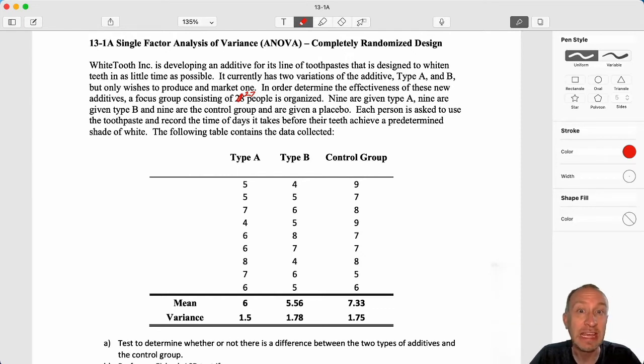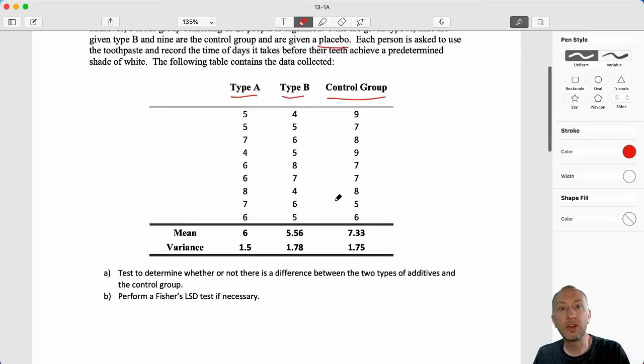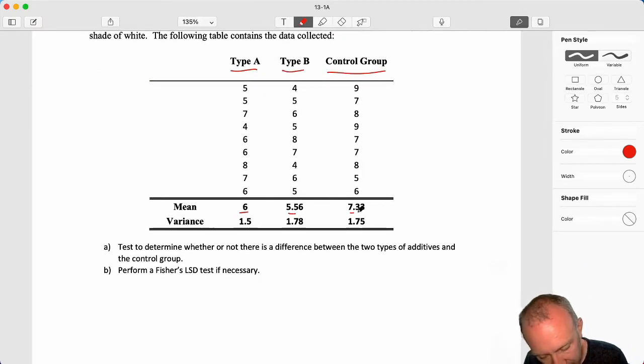Each person is asked to use the toothpaste and record the time in days it takes before their teeth achieve some predetermined shade of white. Our data here is measured in days, also known as our response variable, and we're wondering if that response variable is influenced or somehow related to the type of whitener that I'm using - either Type A, Type B, or maybe it's no different than a control group which is using just regular toothpaste. So here's that data set. Now what you would normally have to do is calculate all of those sample means and those sample variances, so here these are our x-bars and these are our sample variances s squared.